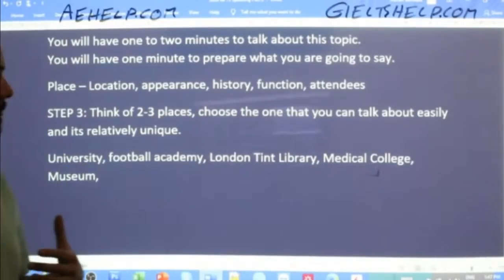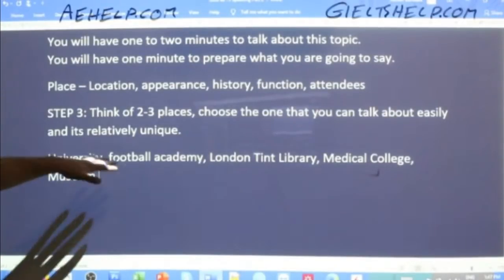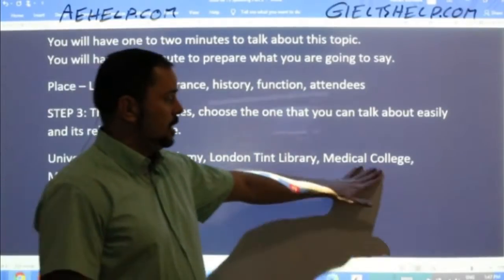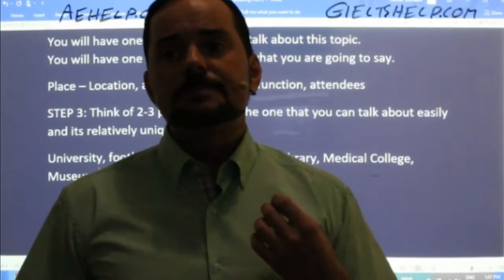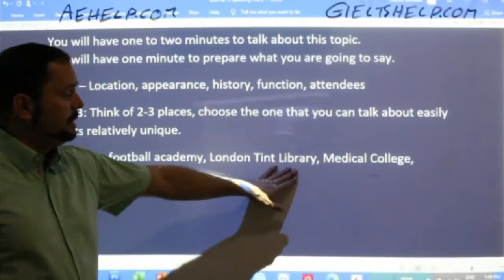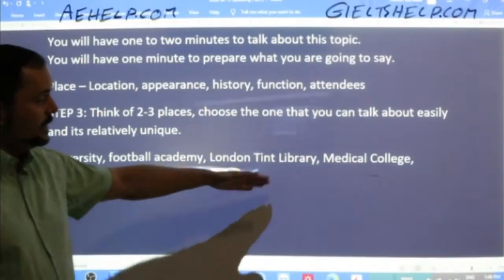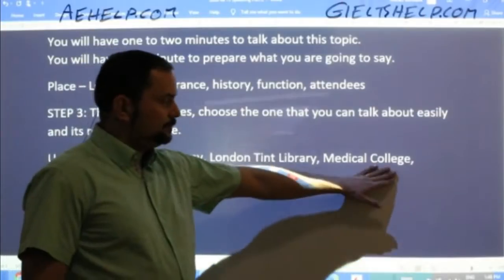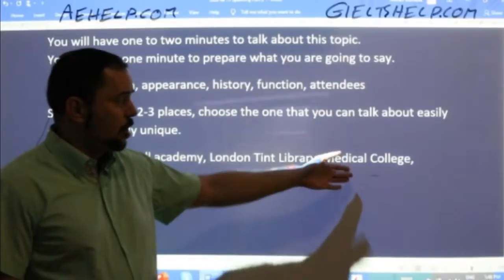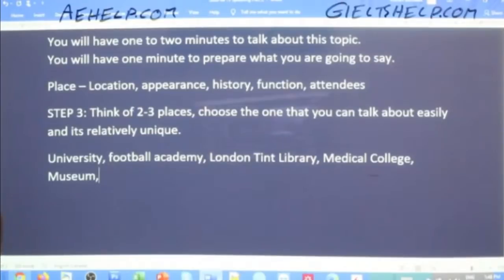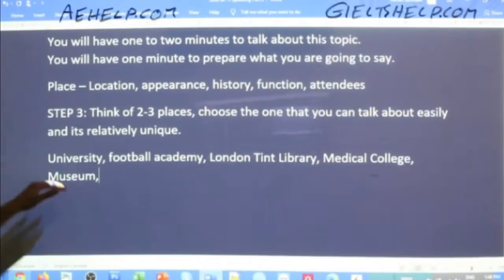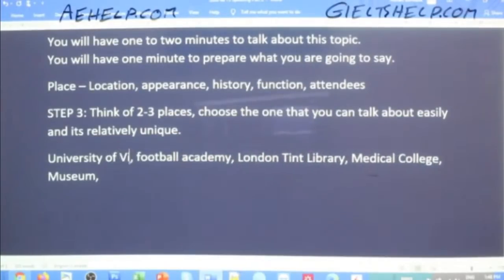University is a good first step; football academy is even better. London Tint Library is my favorite so far — good job, Carolina. Medical college is okay as well. What you want to do is be specific. Library on its own would probably be a popular choice, but talking about the London Tint Library is much more specific and a much better choice. If you talk about medical college, it would be wise to make it a specific one — like Harvard Medical College or New Delhi Medical College. If you're talking about a football academy, make it the Manchester Football Academy. If university, make it the University of Victoria.